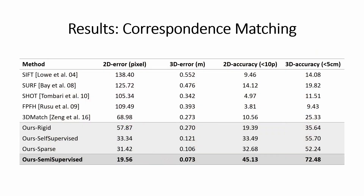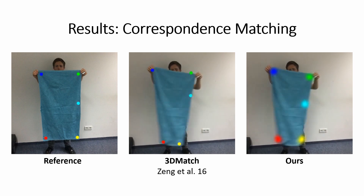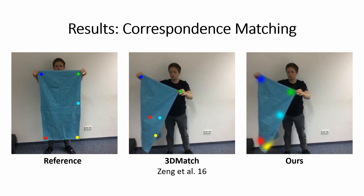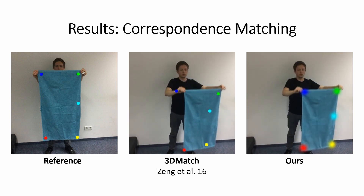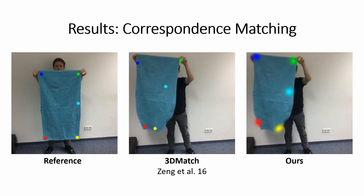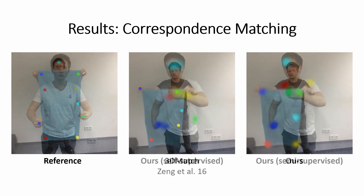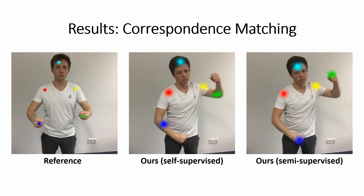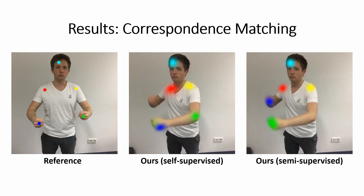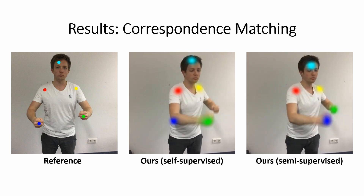We compare against traditional descriptors and 3D Match trained on our data. We also compare our dataset to rigid data from the ScanNet dataset and self-supervised data. 3D Match performs better than the classical approaches, but it is still less robust compared to our method. Self-supervision for training results in inaccurate predictions for more extreme deformations, which is handled properly with our semi-supervised data.